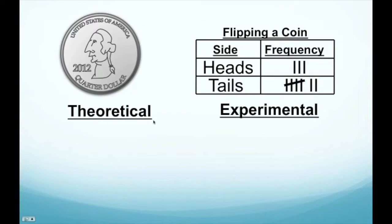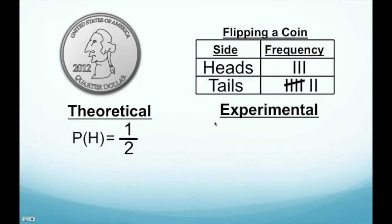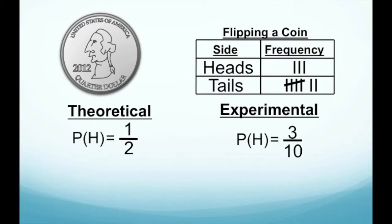Let's talk about our theoretical probability first. The theoretical probability of landing on heads is equal to one half, because there are two total sides to a coin and one of those sides is heads. But for experimental probability, we look at the data — we landed on heads three times out of ten, so the experimental probability is three out of ten.